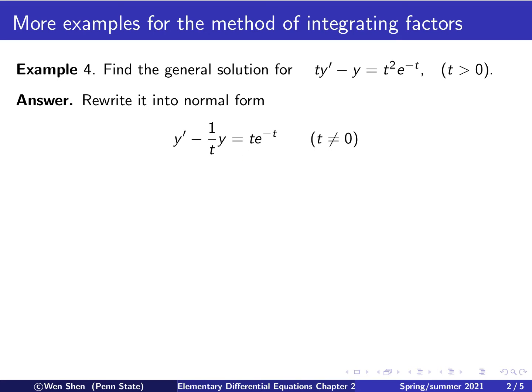Since we divided by t, we must require t not equal to 0, and this is satisfied by the restriction t bigger than 0. Now we can identify the functions p and g: p is the coefficient in front of y, which is negative 1 over t, and g, the right-hand side, is t e to the negative t.